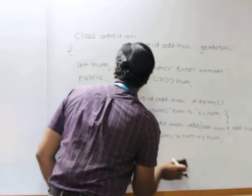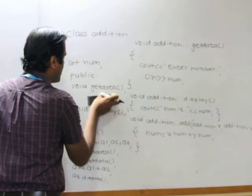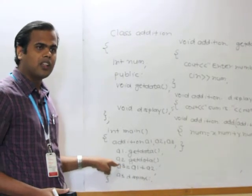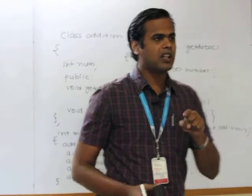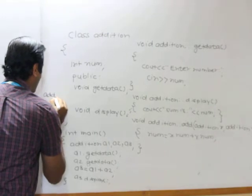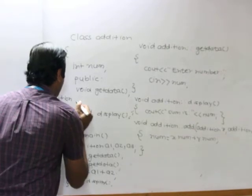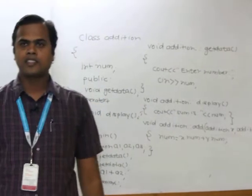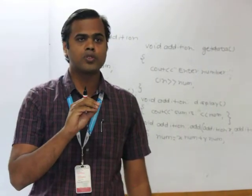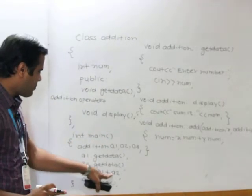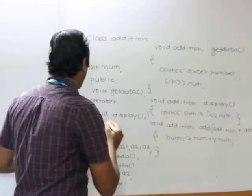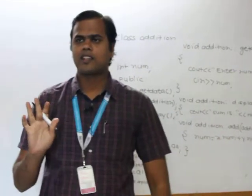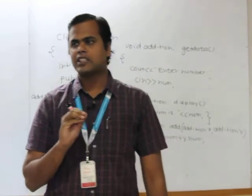Now the function declaration is going to be changed. Since a3 must receive the returned object, the function should return an object of the addition class — so the return type is 'addition'. The function name is 'operator+' — 'operator' is a keyword and '+' is the operator we are overloading. We are passing only one object a2, so the function accepts only one addition object. The get_data and display functions remain the same; only the add function changes.